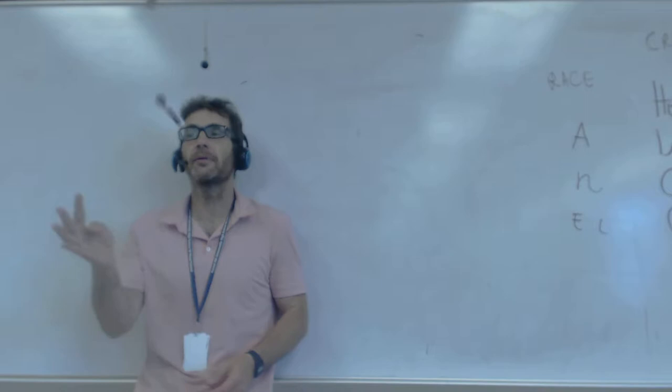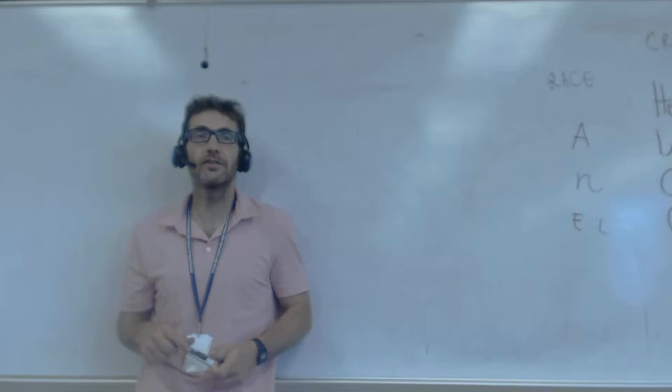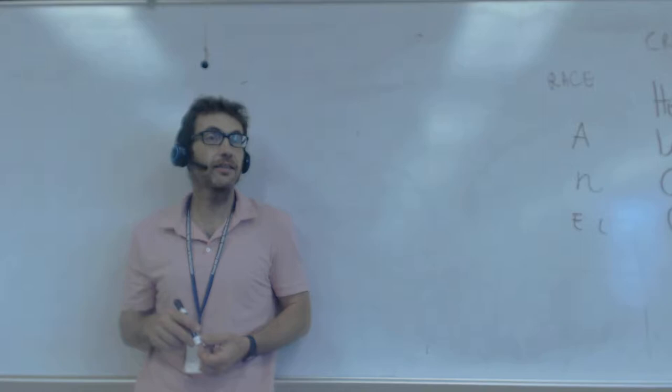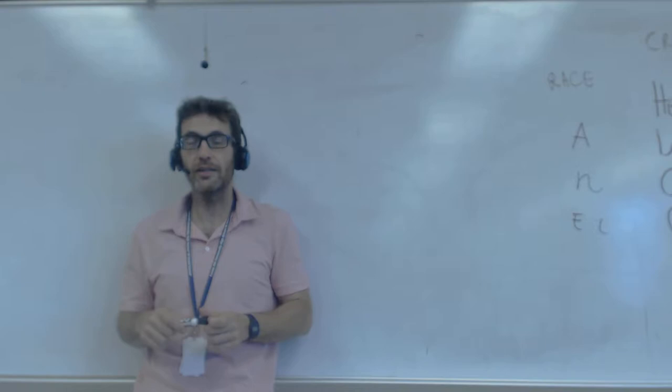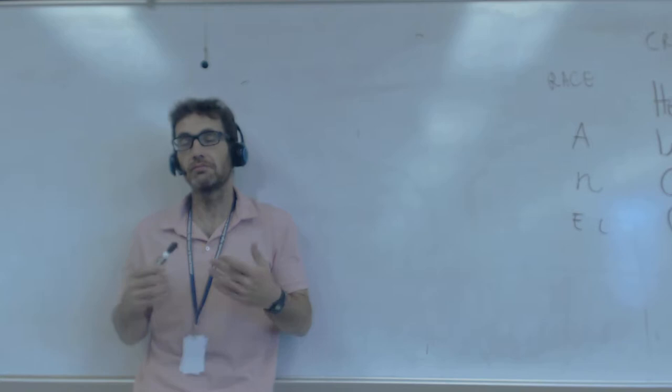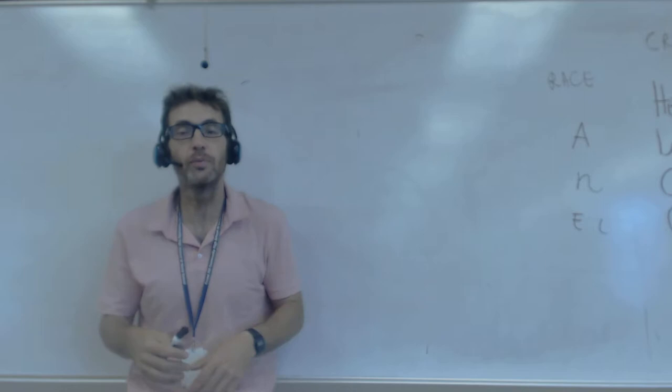An atom is happy if it has eight electrons in the last level. If it hasn't eight electrons, it is not happy, and it looks to share electrons with another surrounding atom. But for today we're going to see just if an atom is happy or not, and next week we'll see how they get happy, how they hang together to be happy.